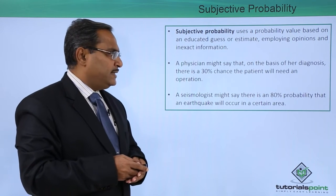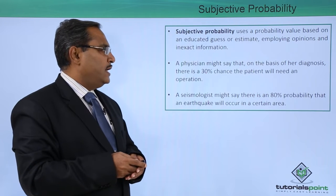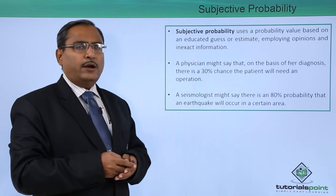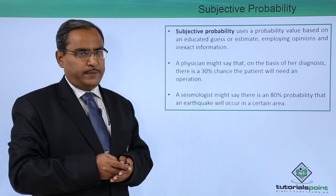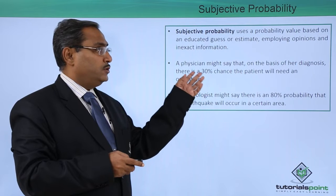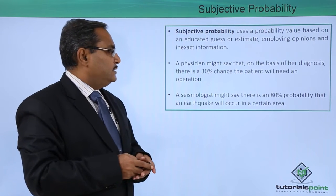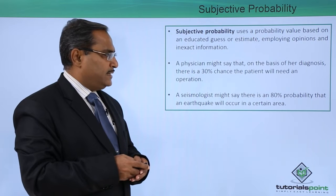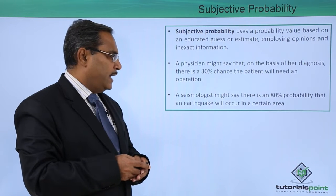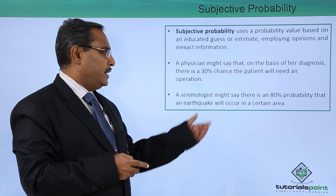A physician might say that on the basis of a heart diagnosis, there is a 30 percent chance the patient will need an operation. This is the probability that the physician or doctor has suggested. A seismologist might say there is an 80 percent probability that an earthquake will occur in a certain area.